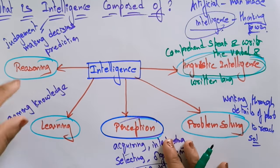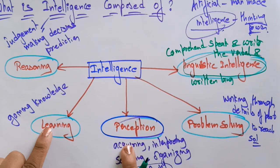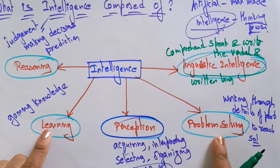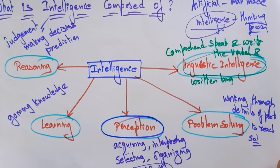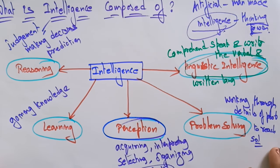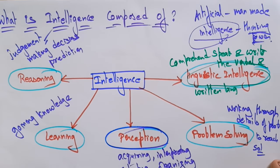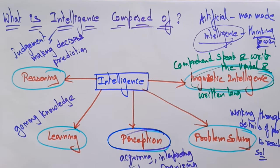I hope you understand what exactly intelligence is composed of: reasoning, learning, perception, problem solving, and linguistic intelligence. Thank you.